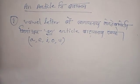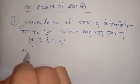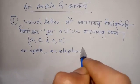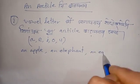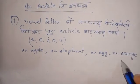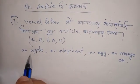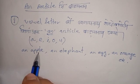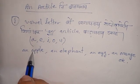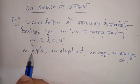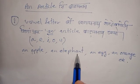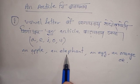This is an example of: an apple, an elephant, an egg, an orange. These are examples of words that take the article 'an' because they begin with a vowel sound.